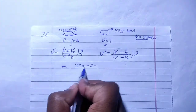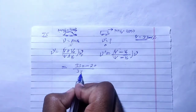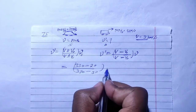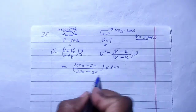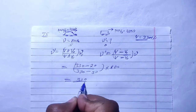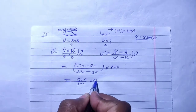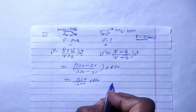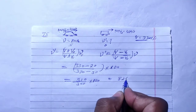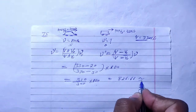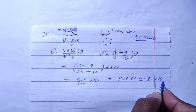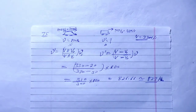Substituting values: V₀ = 20, V = 330 (sound speed), into 800. This gives (330 − 20) / (330 − 30) × 800 = 310 / 300 × 800. The 20s cancel giving 31 × 8 / 3 = 826.66, which approaches 827 hertz. So the apparent frequency heard by the driver in the front car is approximately 827 hertz.